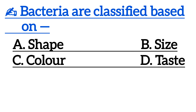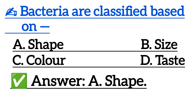Next one is: Bacteria are classified based on — Option A: Shape, Option B: Size, Option C: Color, Option D: Taste. Correct answer is Option A: Shape.